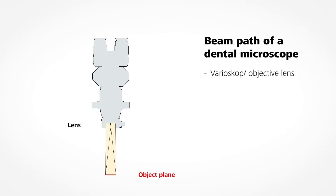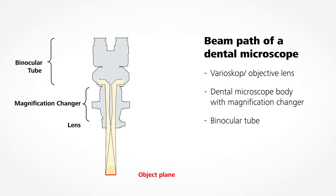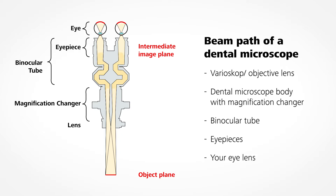Inside the microscope body, the magnification changer magnifies the image by a given factor. The binocular tube focuses the image information into the intermediate image plane. The two eyepieces magnify the intermediate image and project it onto the exit pupil.